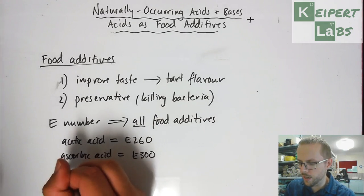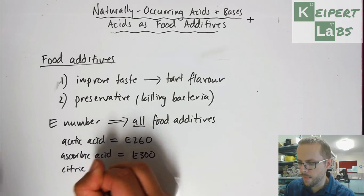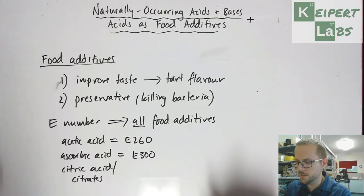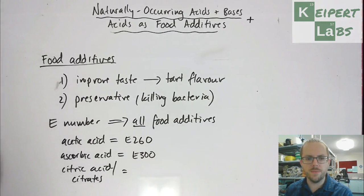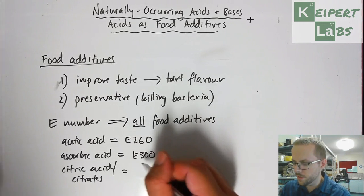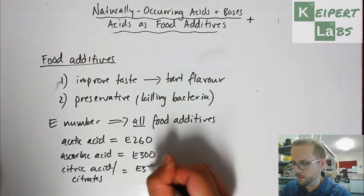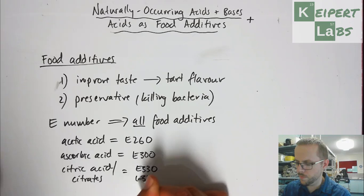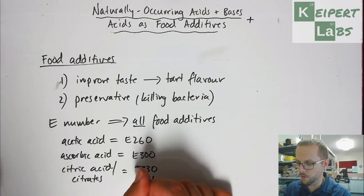And then we've got citric acid and the citrates. So various kinds of substances that are derived from citric acid. So we've got E330, 331, and 332 are all in that kind of family of compounds.